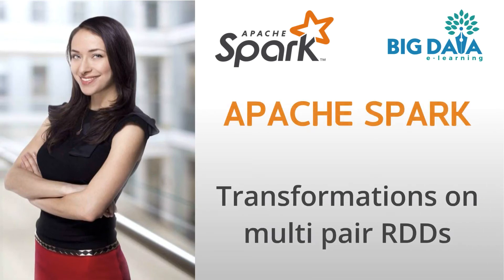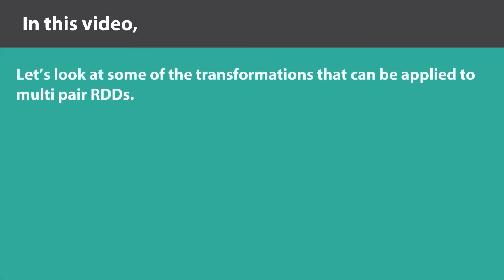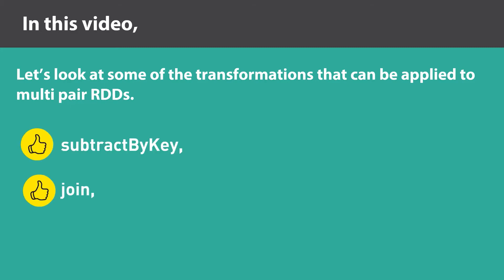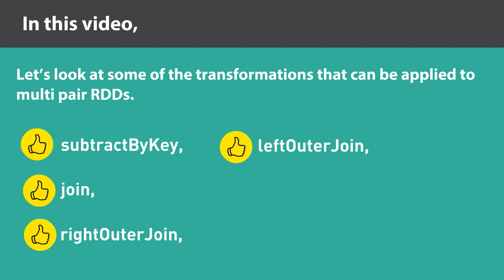Transformations on Multiple Pair RDDs. In this video, let's look at some of the transformations that can be applied to multi-pair RDDs: 1. Subtract by key, 2. Join, 3. Right outer join, 4. Left outer join, 5. Co-group — these are some of the pair RDD transformations.